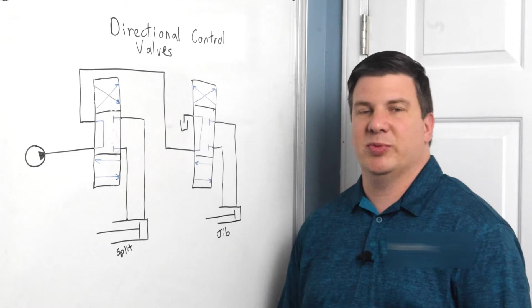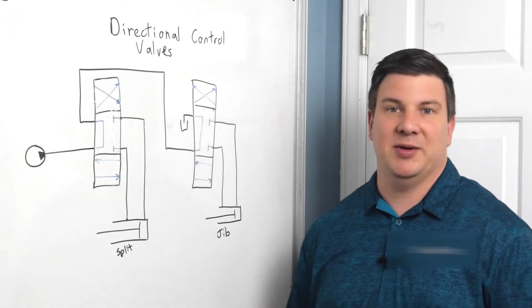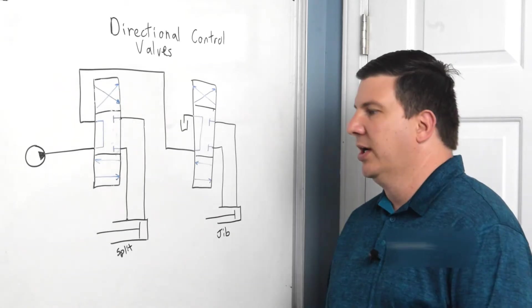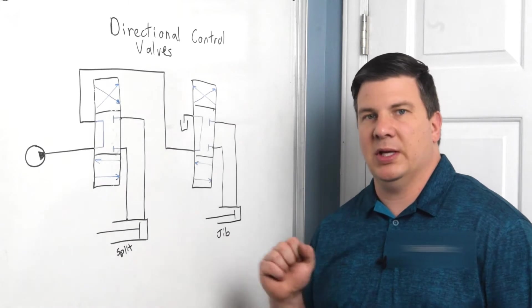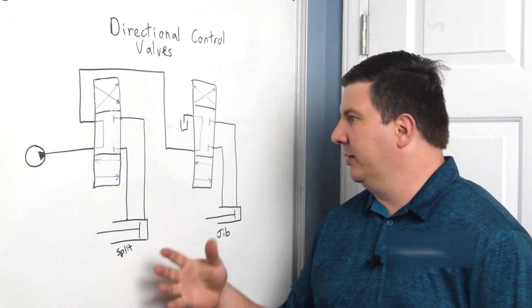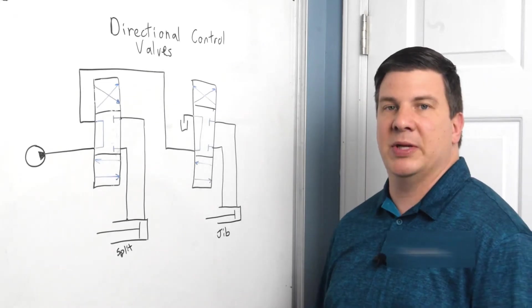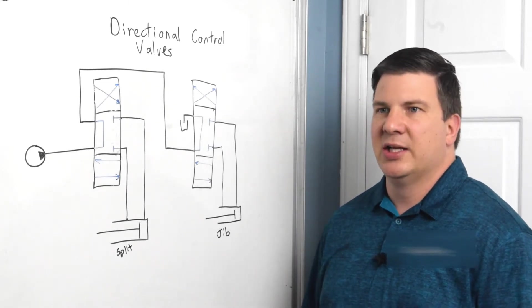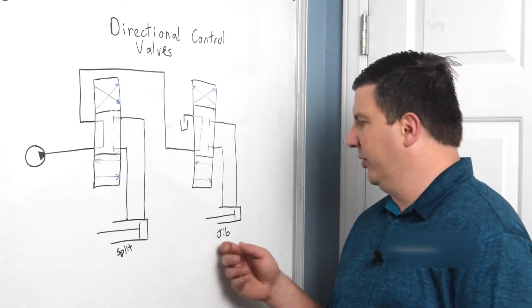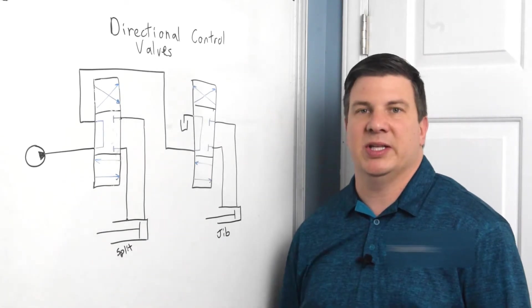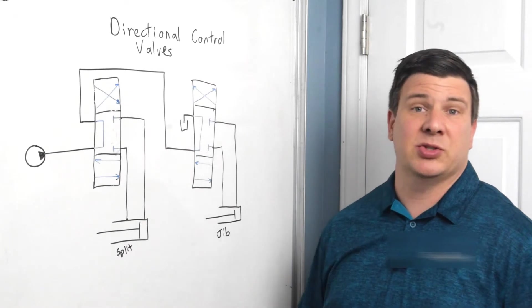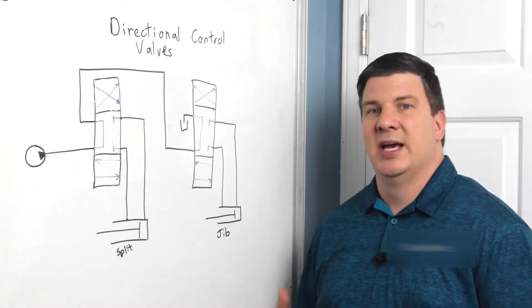So in our log splitter, we actually have this bad situation in practice. And it doesn't make such a big deal on this piece of equipment because it's rarely that I'm going to be operating both the jib and the splitter mechanism at the same time. But I still want to illustrate what would happen if I did.